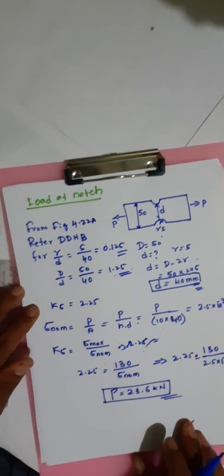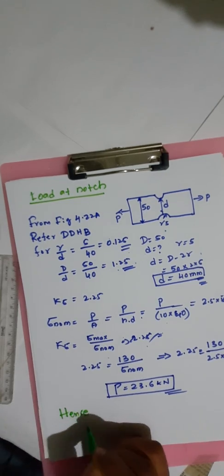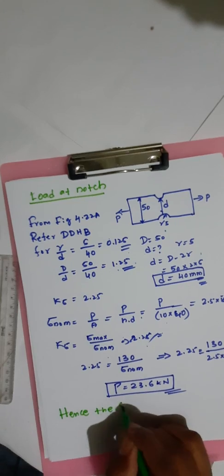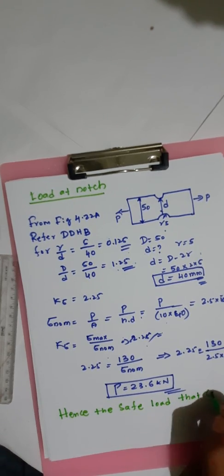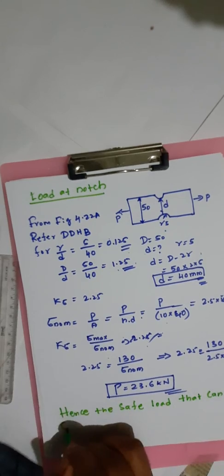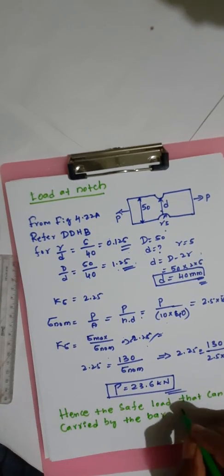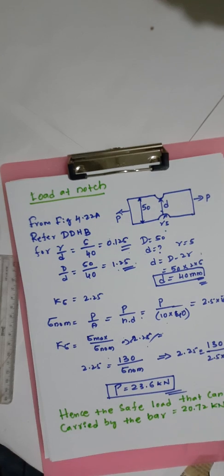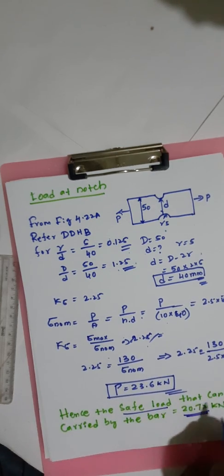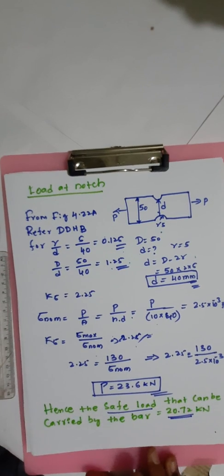Hence, the safe load that can be carried by the bar is equal to 20.72 kN, which corresponds to the circular hole case, since it is the lower of the two calculated values.